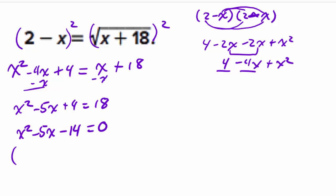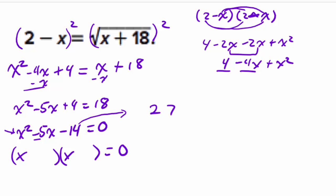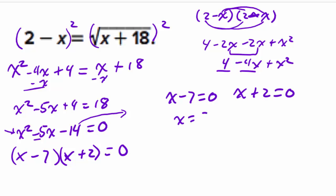We solve by factoring. For x squared minus 5x minus 14, we need factors of negative 14 with a sum of negative 5. Seven and 2 have a difference of 5, so making 7 negative gives (x minus 7)(x plus 2) equals zero. Setting each equal to zero: x minus 7 equals 0 gives x equals 7, and x plus 2 equals 0 gives x equals negative 2. Those are the two potential solutions.